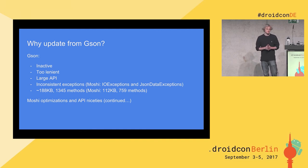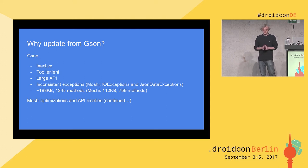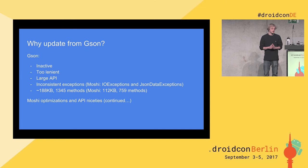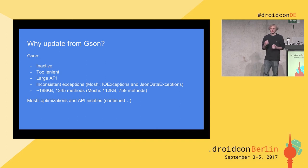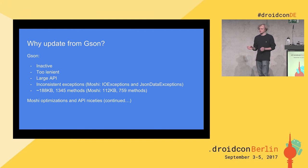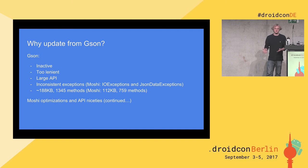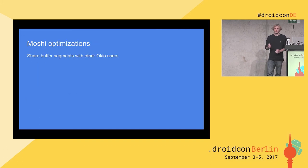I'm going to go over some of the big optimizations and API niceties of Moshi. The API niceties are really the big thing. I'll talk about some actual performance optimizations, but the API is what's really going to save you a lot of effort. I consider a lot of the performance to not be as big of a deal, because most of the time when we're using things like Moshi we're using it on the network, and the latency from the network just overshadows the performance time of your serialization library — assuming you're doing streaming and not buffering an entire model into memory.